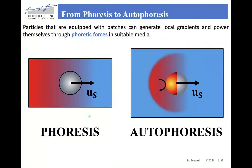The step from phoresis to autophoresis is fairly trivial. Instead of applying an external electric field, an external concentration gradient, or an external temperature gradient, we use particles that are equipped with surface patches which interact with the medium and generate themselves this gradient or electric field. A key aspect is that the gradient is local and moves or rotates together with the particle.